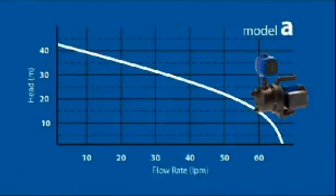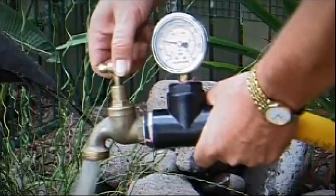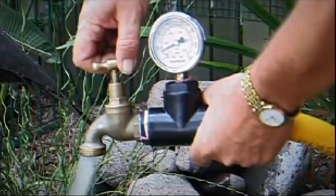As you can see, pressure will always affect the flow. Another way we can show this is by putting a pressure gauge with a tap on a hose and connecting it to a pump.